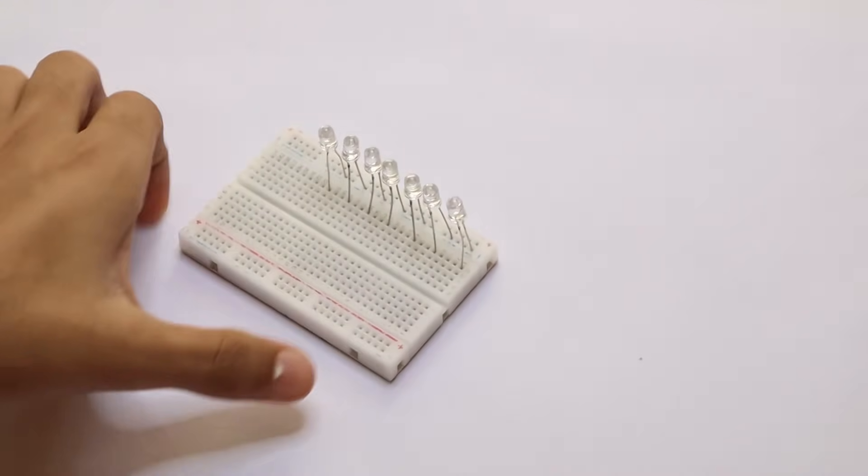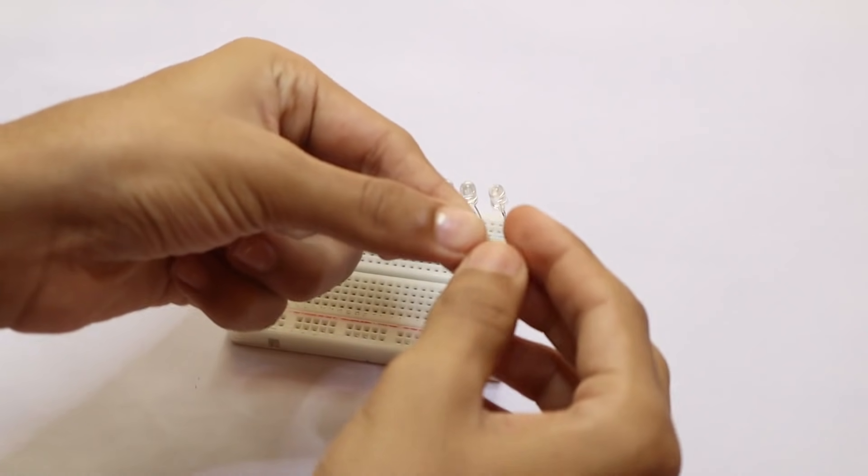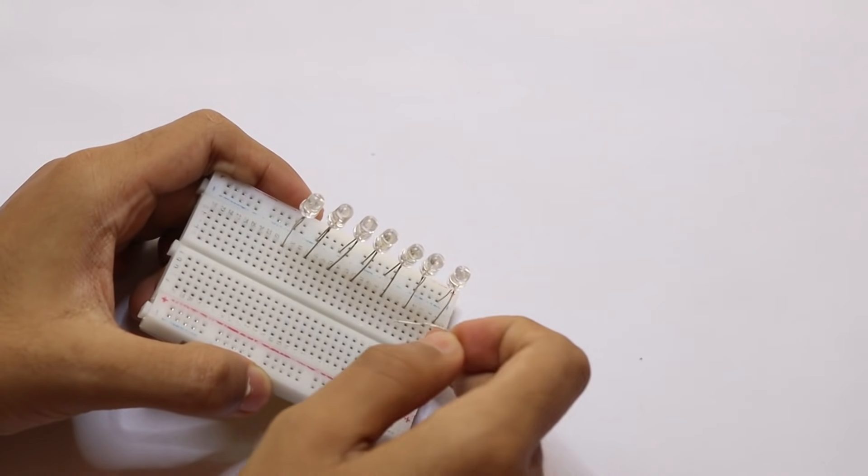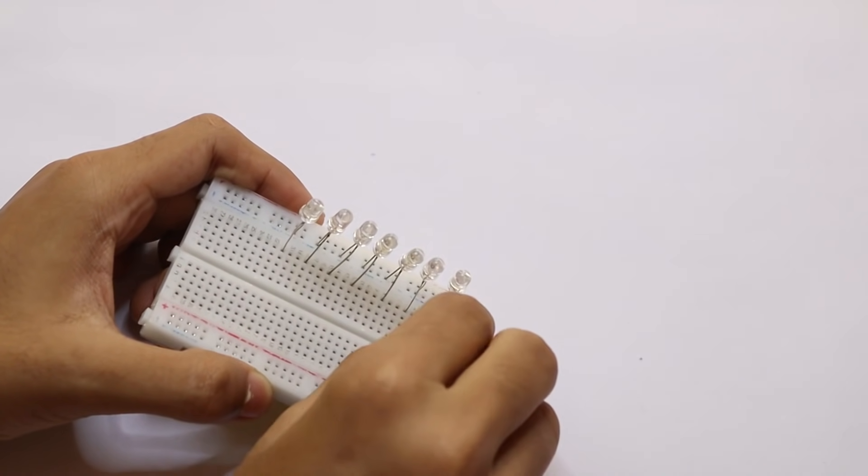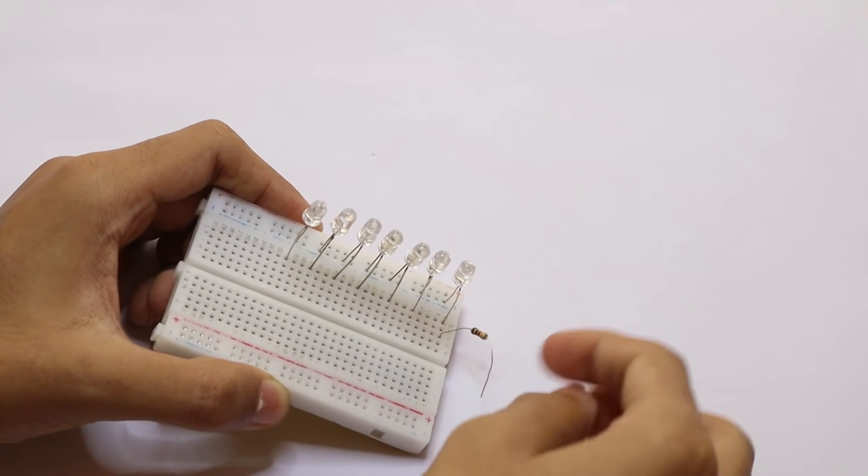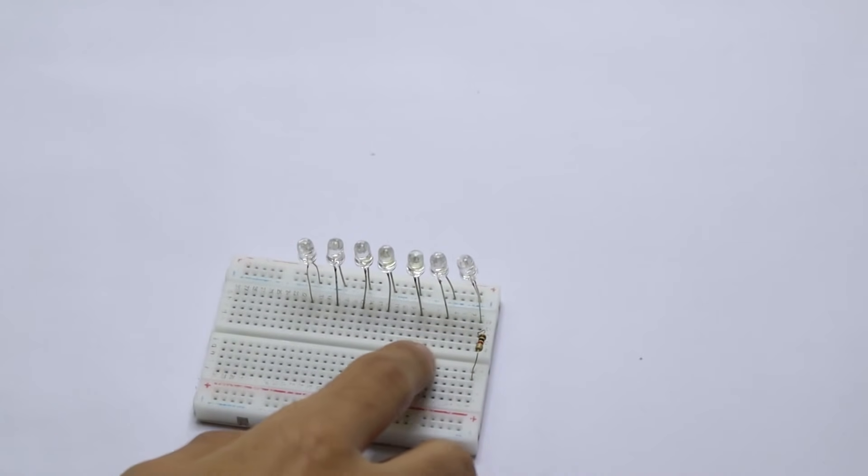Now I'll show you. Bend the resistor like that and put one end to this row. Make sure it is aligned with the LED and the other side to this row like that. Now do this to all the rows.